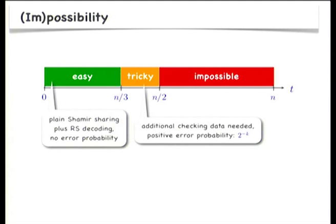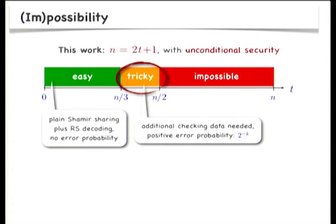If this threshold parameter t is smaller than n over 3, robust secret sharing can easily be obtained — you can just do plain Shamir sharing and use Reed-Solomon decoding in the reconstruction phase. On the other hand, if t equals n over 2 or is even bigger than that, then it's easy to see that robust secret sharing is not possible. In this talk, I'm going to focus on this area in between where robust secret sharing is possible, but it comes at some price. We will have some overhead in the share size and will have to live with a small but positive error probability. I'm going to consider the extreme case in this range where n is 2t plus 1, and unconditional security — no computational assumptions.